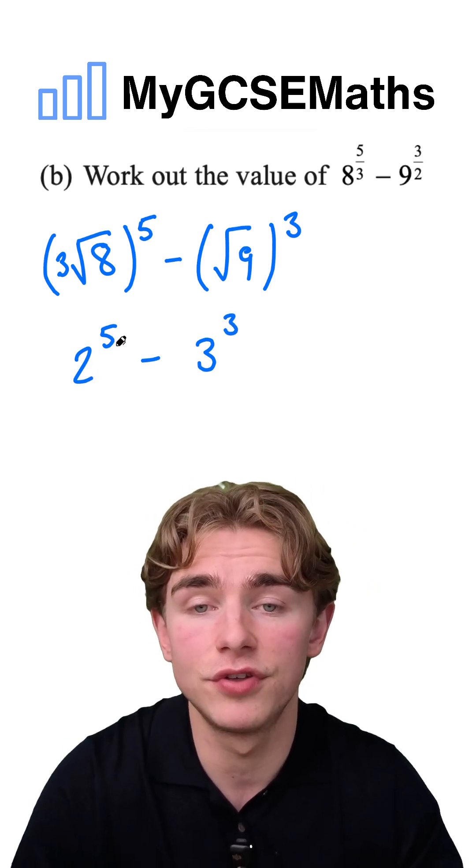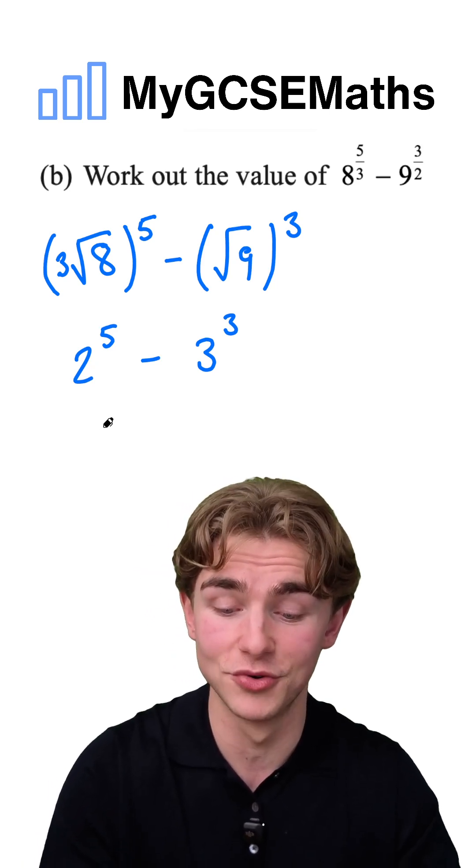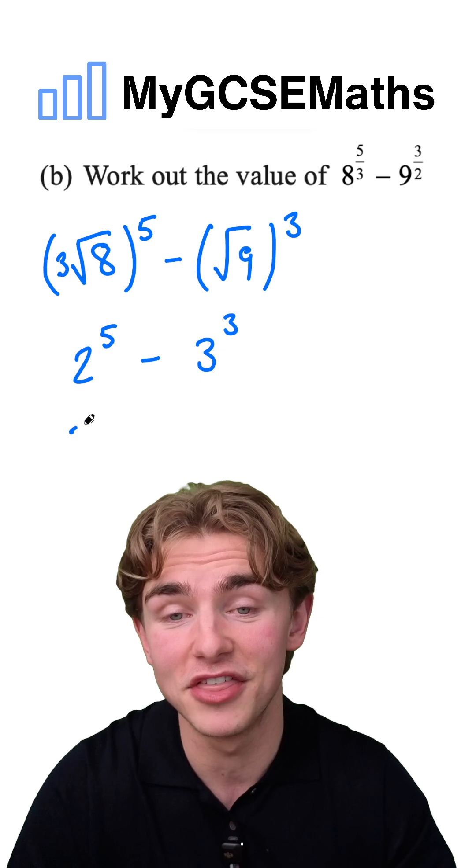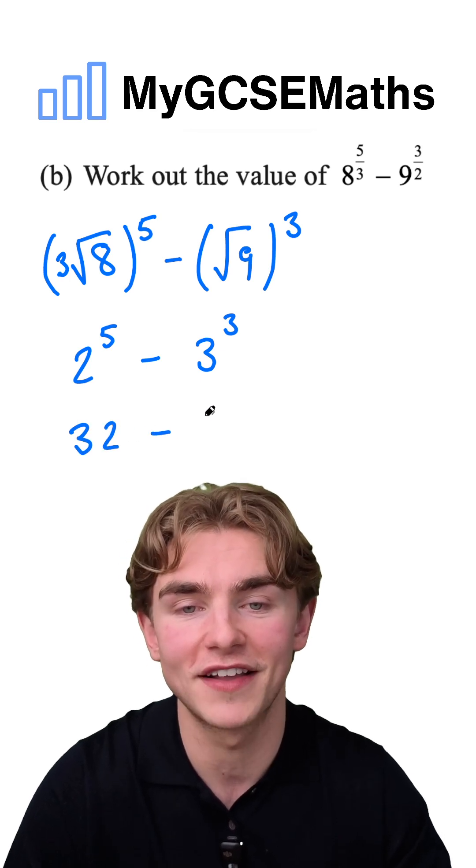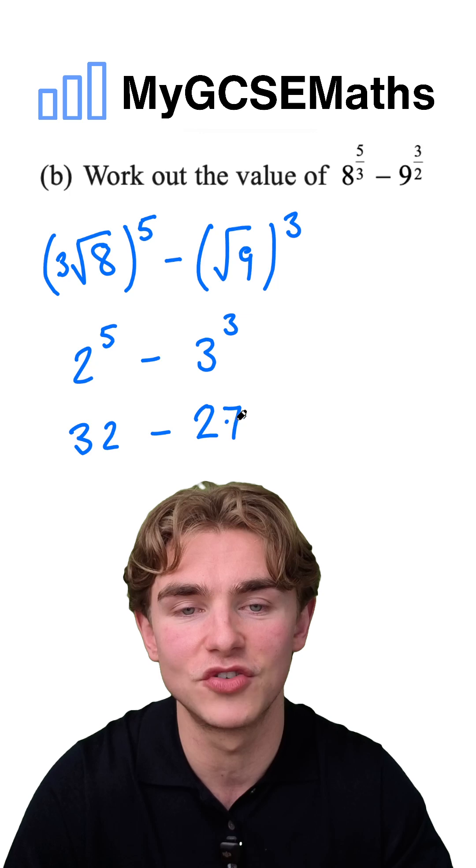What are we going to do now? 2 to the power of 5, 2 times 2 times 2 times 2, that is going to be 32, and then we're going to subtract our 3 cubed, that is going to be 27.